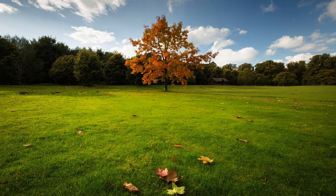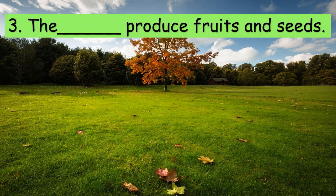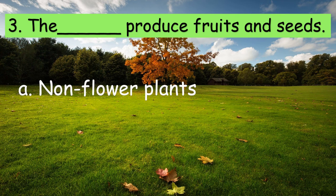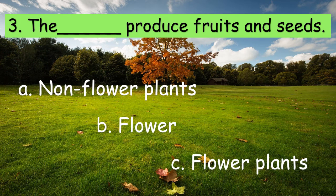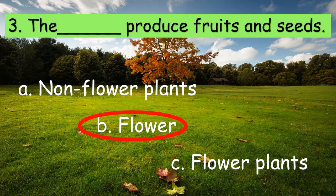Number three: the blank produce fruits and seeds. What is the correct answer — A, B, or C? The correct answer is B. The flowers produce fruits and seeds. Very good!